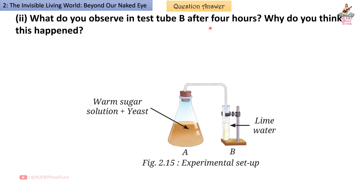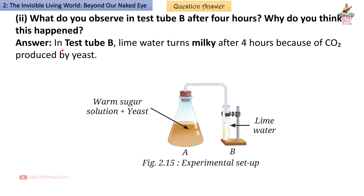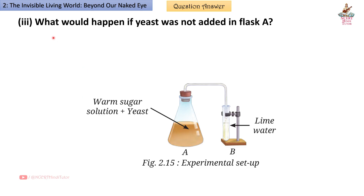Second — what do you observe in test tube B after 4 hours, and why? Answer: Lime water in test tube B turns milky after 4 hours because of CO2 produced by yeast.